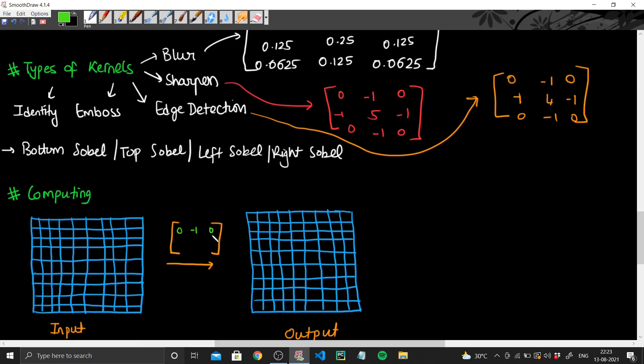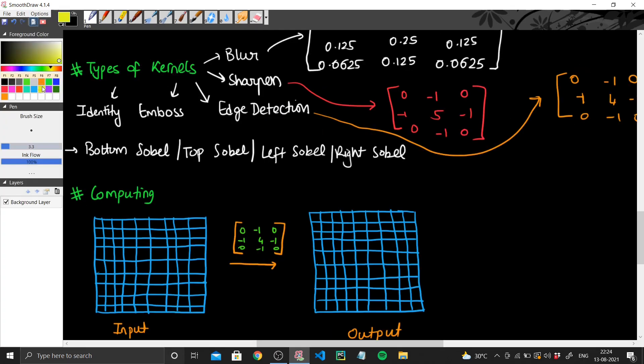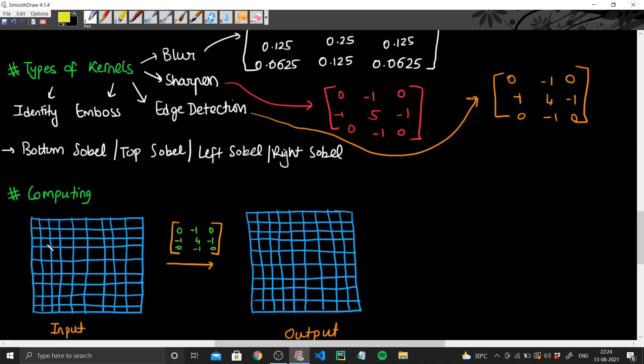So for simplicity sake, I'll just be using the sharpen kernel to get some basically easy values for calculation. And so my sharpen kernel is 0, minus 1, 0, minus 1, 4, minus 1, 0, minus 1, and 0.